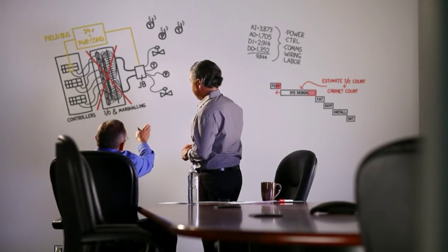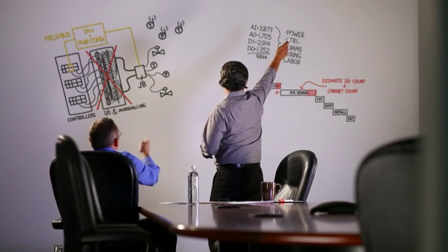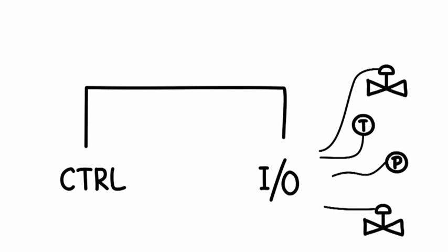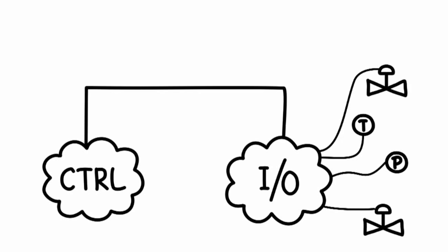We need to design to like 90% accuracy early, then finalize the requirements when we're closer to install and startup. I'm not sure I follow. Well, like I said before, I.O. count drives everything, including cabinet count. What if an I.O. card could report to any controller? Kind of like a cloud of I.O. connecting to a cloud of controllers. Yeah, well, now I'm cloudy.